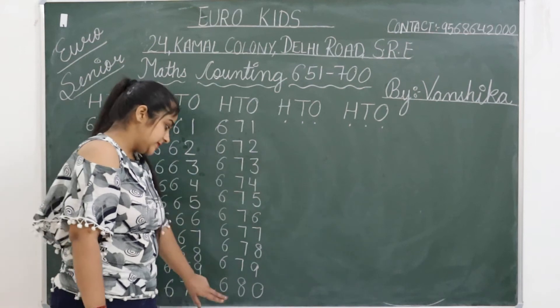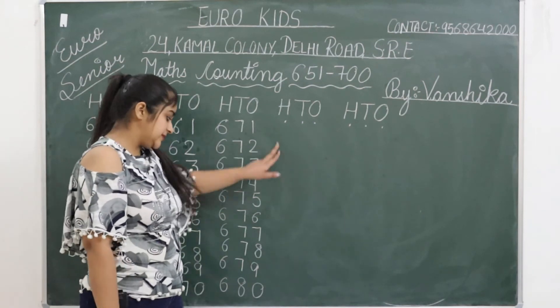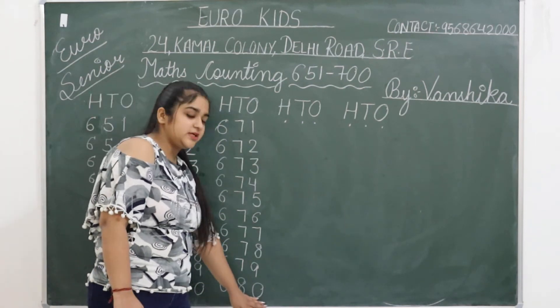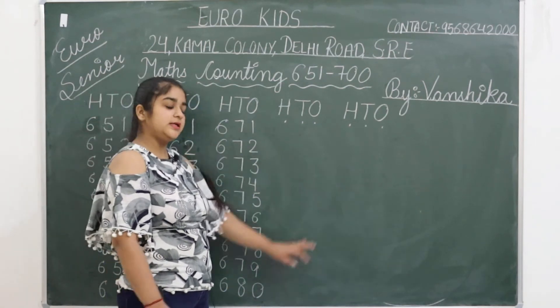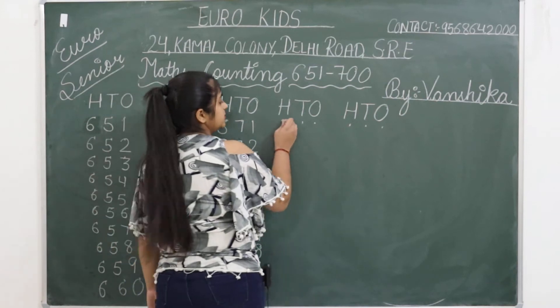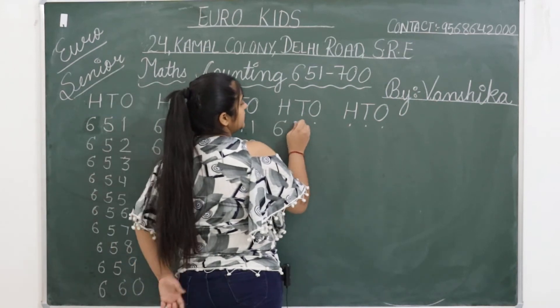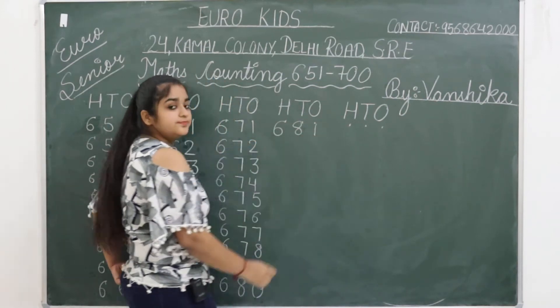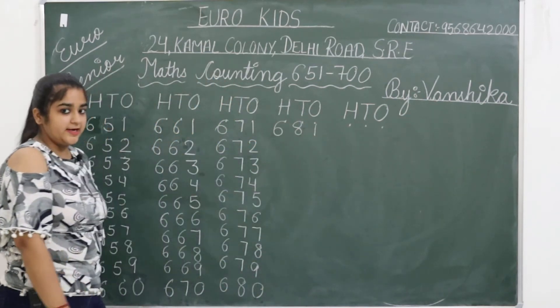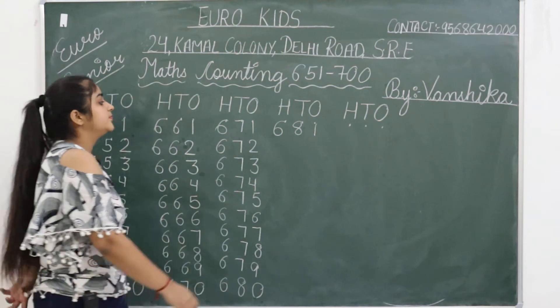Understood? And the next line — 6 stays as it is. After 80 comes 81. So we write 681.